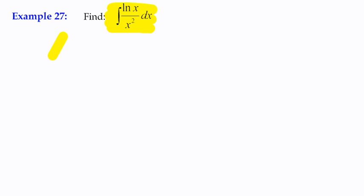So the first thing I would do is actually rewrite log x over x squared dx as the integral of the natural log of x multiplied by x to the power negative 2. So we can rewrite 1 over x squared as x to the power negative 2. And therefore, we have a product of terms and therefore we can use integration by parts.